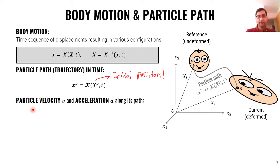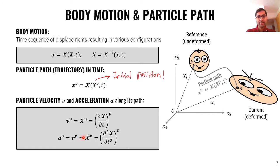So, easily we can define particle velocity V and acceleration A as the time derivative and second time derivative of the forward map for that given particle.